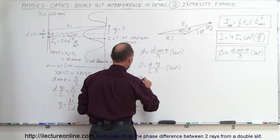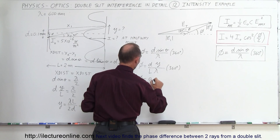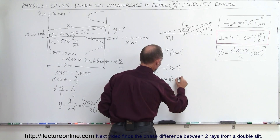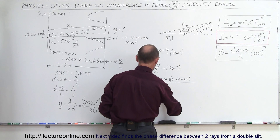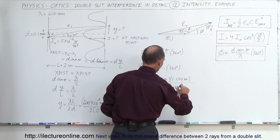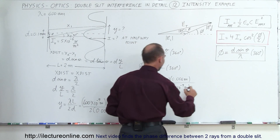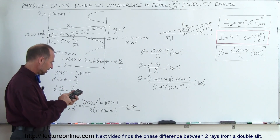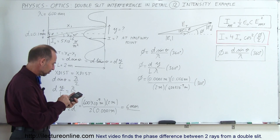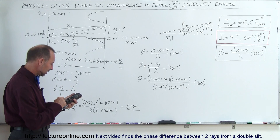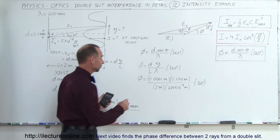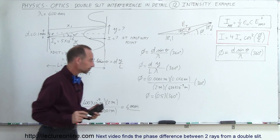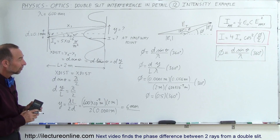Plugging in the values: phi equals the distance between the slits, 0.0001 meter, times y which is 6 millimeters (0.006 meters), divided by 2 meters for the screen distance, divided by 600 times 10 to the minus 9 meters for the wavelength, multiplied by 360 degrees. With the calculator: 0.006 times 0.0001 divide by 2 divide by 600e-9 equals 0.5. So phi is equal to 0.5 times 360 degrees, meaning the phase difference is 180 degrees.